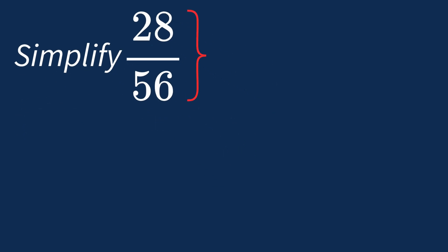To simplify 28 over 56, we need to look for the common factors between the top number, the numerator, and the bottom number, the denominator.